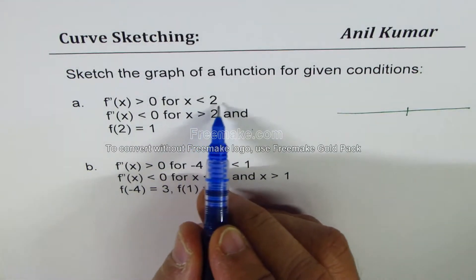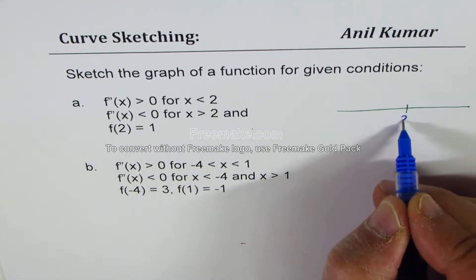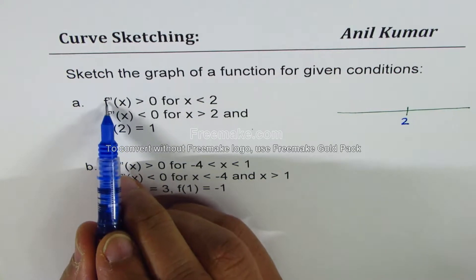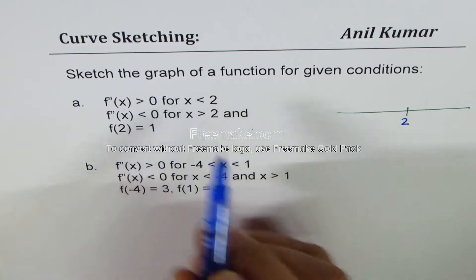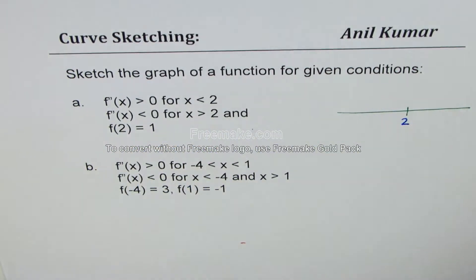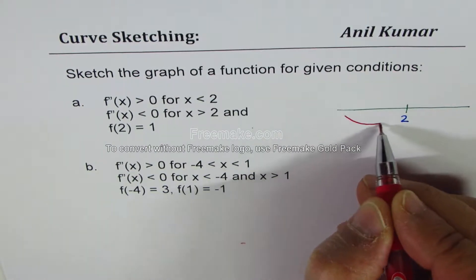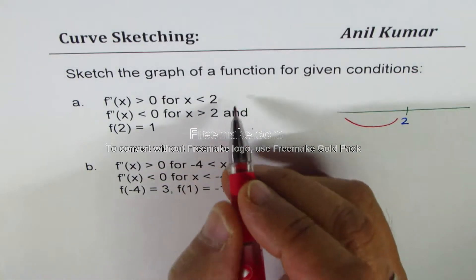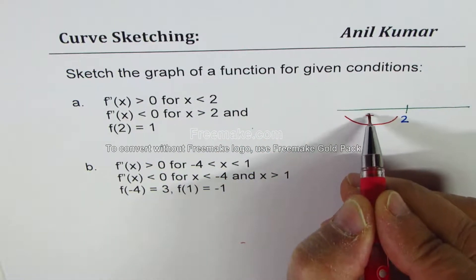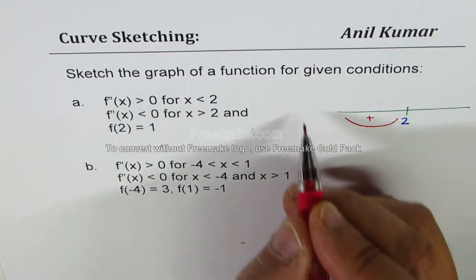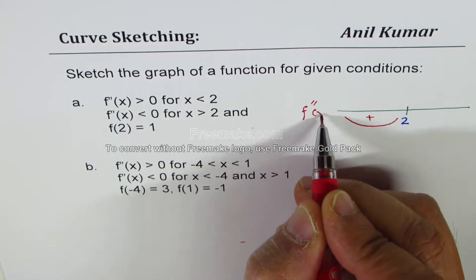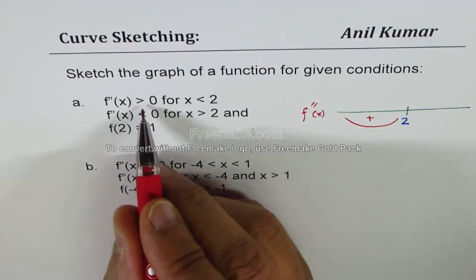So we are looking at a critical point where x equals 2, and when we say second derivative is greater than 0 when it is less than 2, that means on this side, the left side, it is concave up since second derivative is positive, greater than 0.